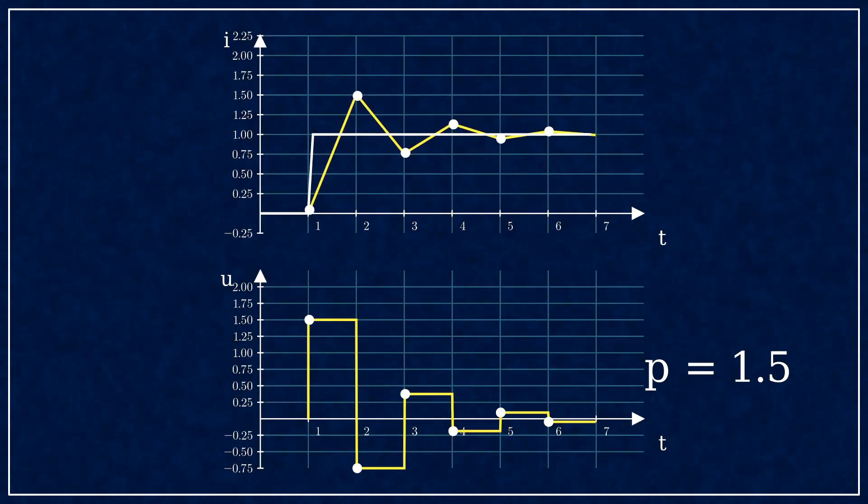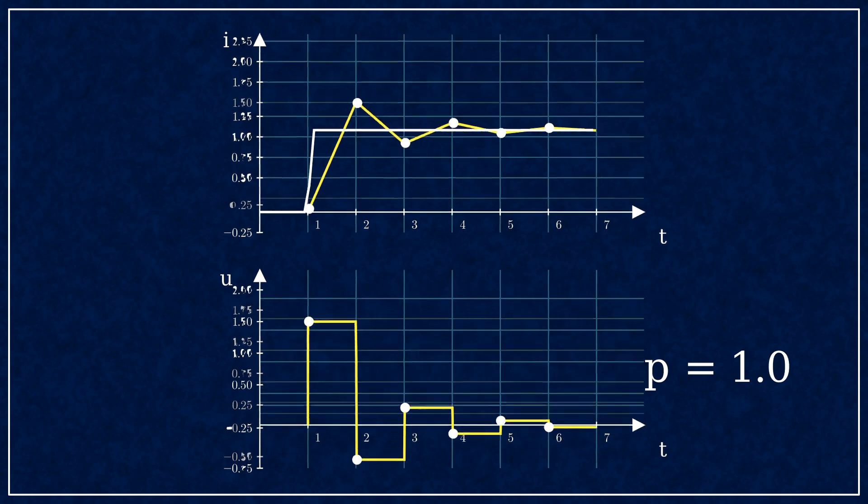If you use high gain, say 1.5, you get oscillations. For every step the control uses 50% too much effort, though it still converges.